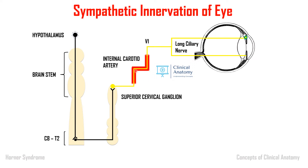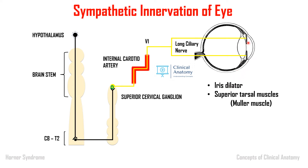The fibers travel as a plexus along the internal carotid artery. In the cavernous sinus, this plexus is accompanied by the abducent nerve (cranial nerve 6). Fibers leaving the cavernous sinus travel via the ophthalmic branch of the trigeminal nerve, then via the long ciliary nerve to supply the iris — specifically the dilator pupillae muscle — and the superior tarsal muscle (Müller's muscle). Disruption leads to miosis and drooping of the upper eyelid.